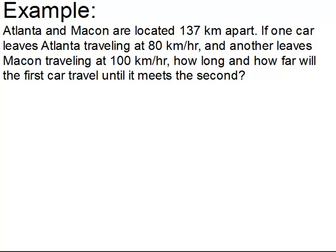Atlanta and Macon are located 137 kilometers apart. If one car leaves Atlanta traveling at 80 kilometers per hour and another leaves Macon traveling at 100 kilometers per hour, how long and how far will the first car travel until it meets the second? Let's think about what we're given here, what we're trying to solve for, and see if we can figure out a relationship between these variables.